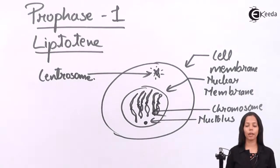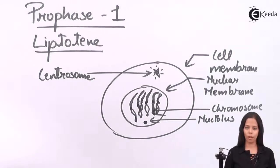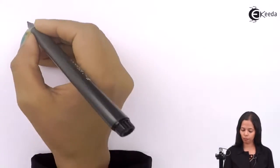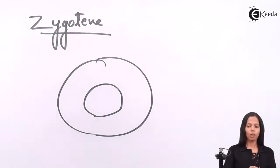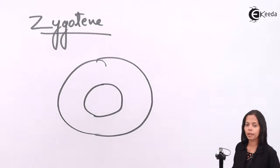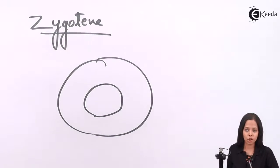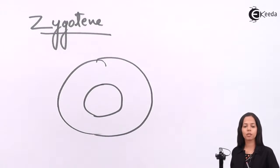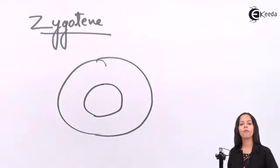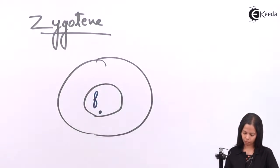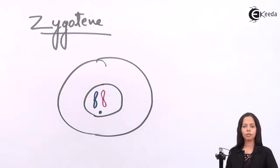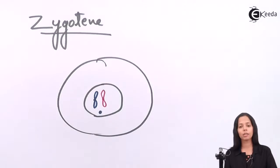This is how the nucleus looks in the first stage, Leptotene, of Prophase I. The next stage is Zygotene. In Zygotene, homologous chromosomes come very close to each other and form a coupling structure called a bivalent. The process of formation is called synapsis. The cell membrane and nuclear membrane are still intact.